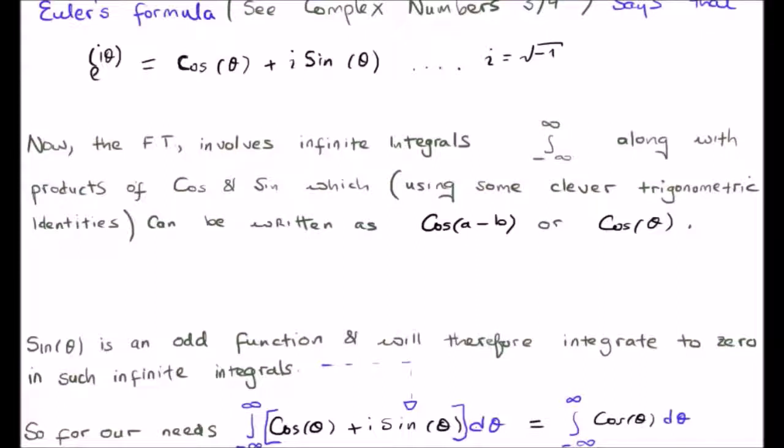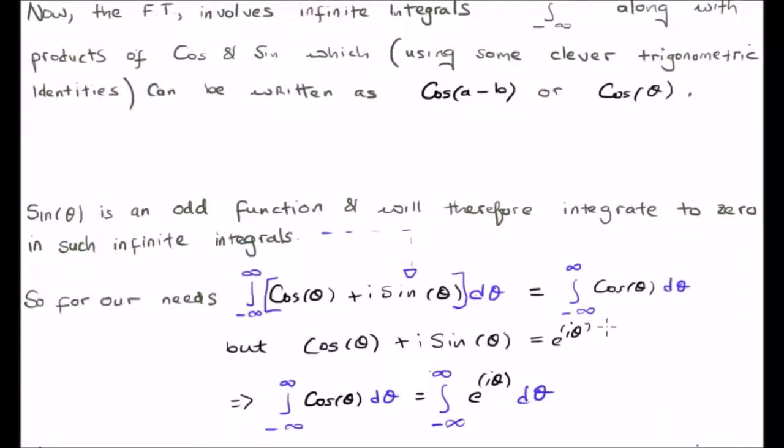So, it's equivalent to integrate cos theta plus i times sine theta and just simply cosine theta. I'm sure what you can see coming, and namely, we're going to invoke Euler's formula.